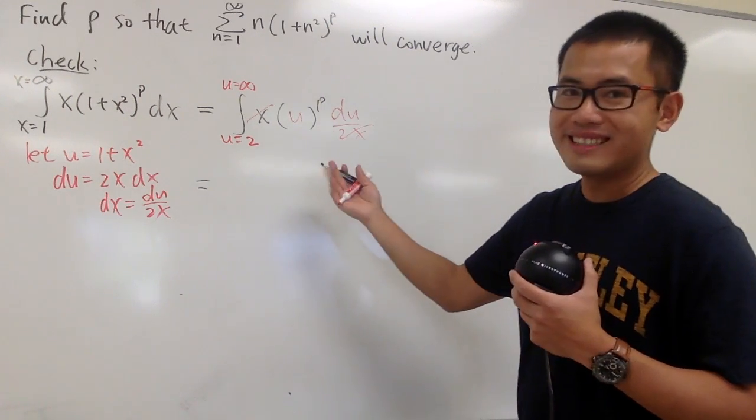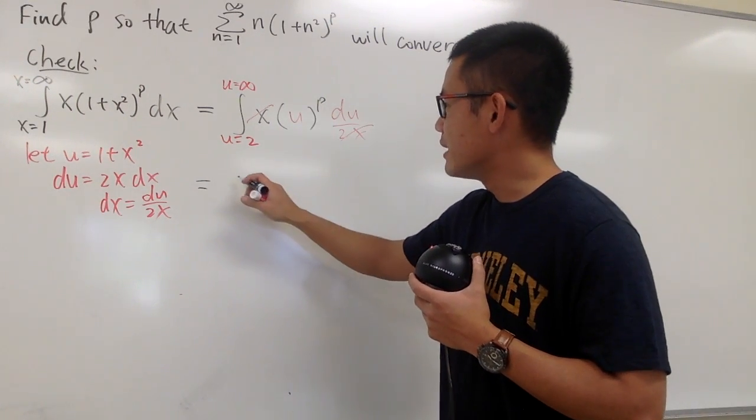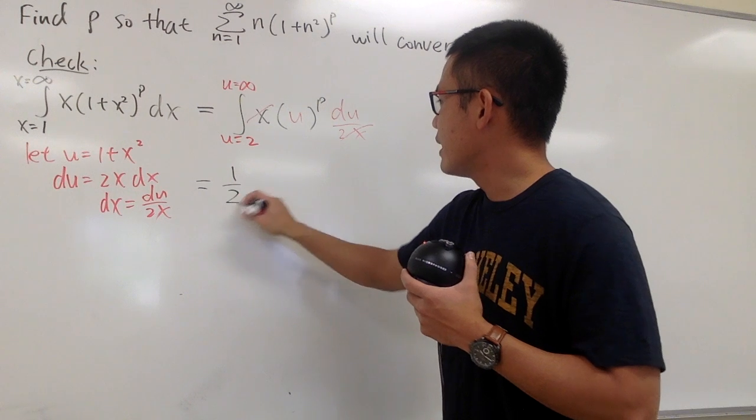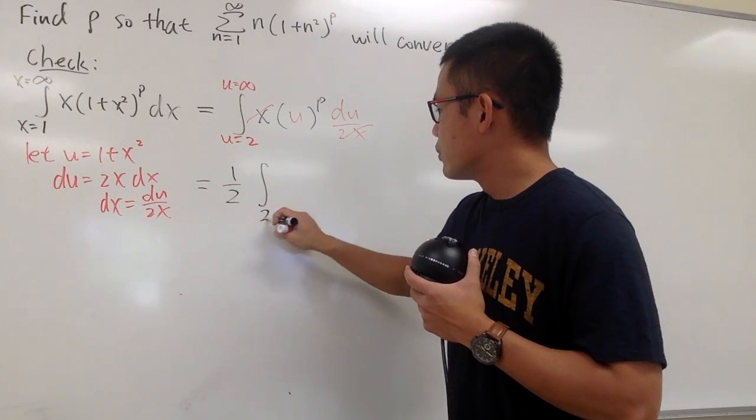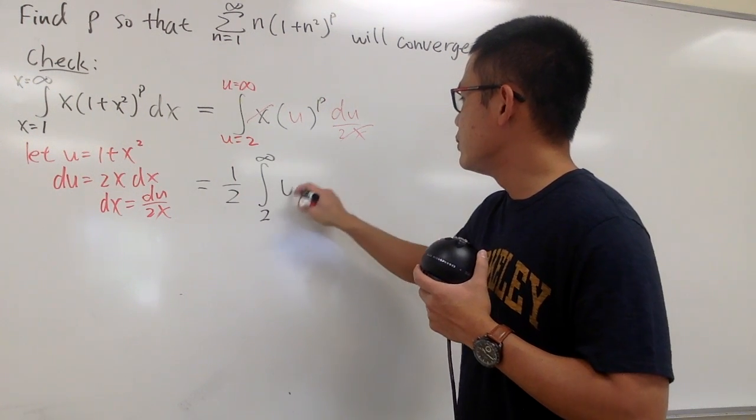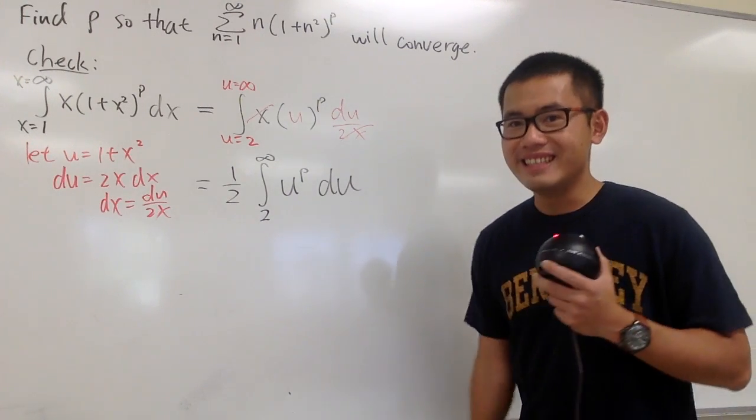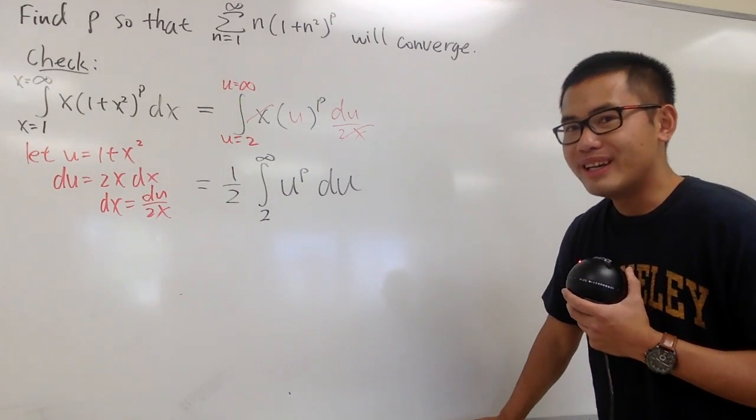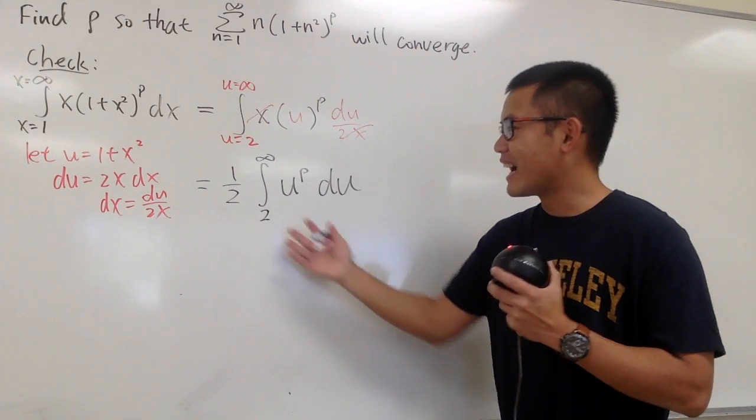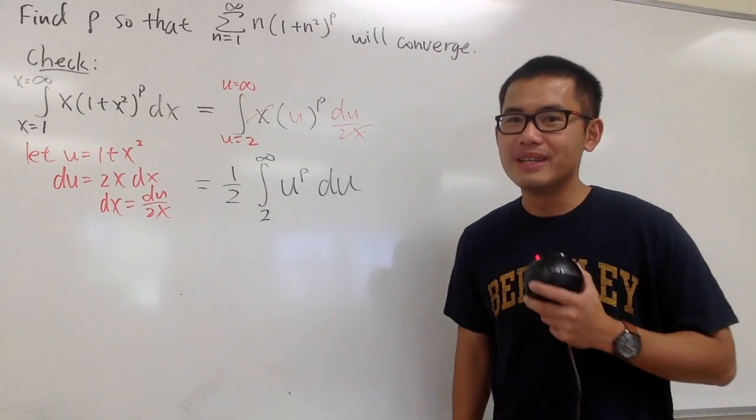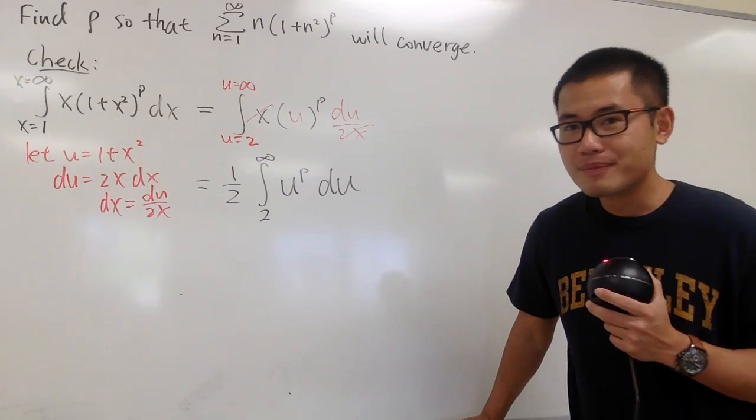Now we have to look at this. You see, this is the same thing: 1 half in the front, integral 2 to infinity, and this is u to the p's power, and this is du. Do we recognize this kind of improper integral? Yes, we should.